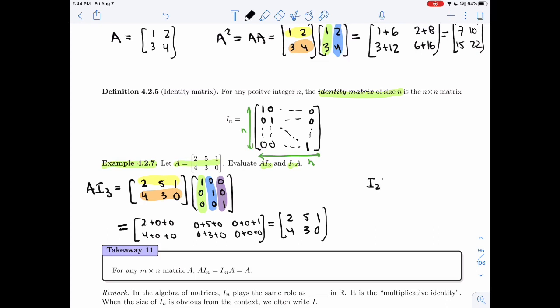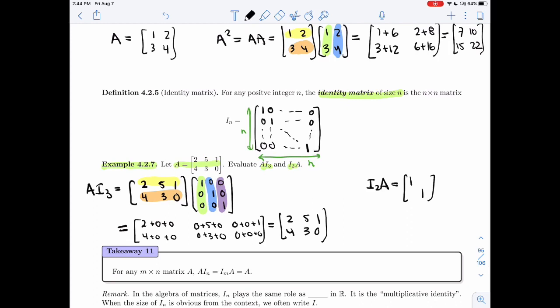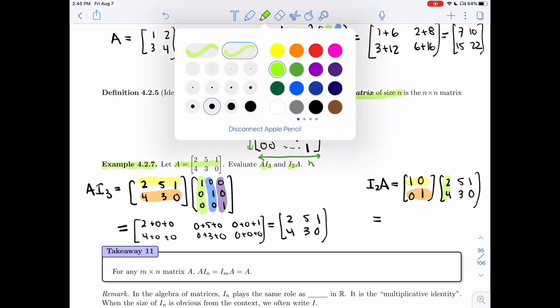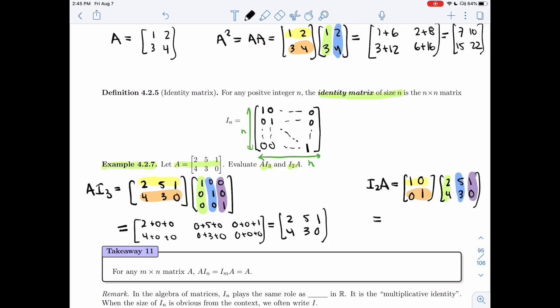If I was looking at I₂A, I choose a 2 by 2. Again, you put ones on the diagonal, zeros everywhere else. And then I'm going to multiply this by two, five, one, four, three, zero. And so I will get these vectors to multiply. Yellow times green is two plus zero. So I get two. Five plus zero, I get five. One plus zero, I get one. Zero plus four. Zero plus three. Zero plus zero. Do you notice anything? Not only are these two equal, but they're actually both equal to A. So multiplying by the identity matrix didn't change anything. I get A back.